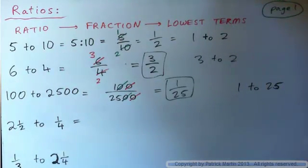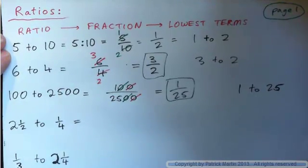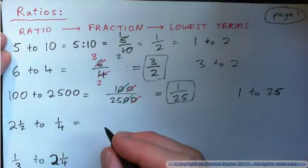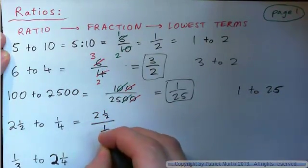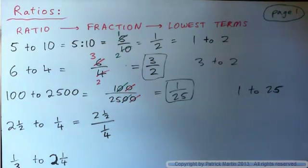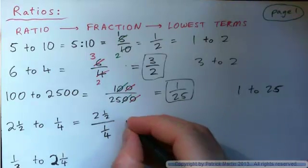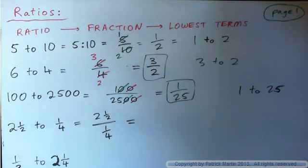Now, two and a half to one quarter. We're going to write it as a fraction, then put the fraction in lowest terms. We're going to have to remember how to do complex fractions, because this looks like two and one half over one quarter. Do you remember how to simplify complex fractions? The first step is to make sure you have one fraction divided by another fraction. You've got to turn this mixed number on top into an improper fraction.